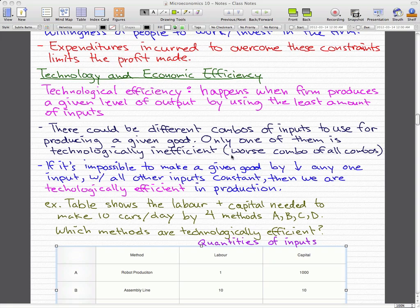Now if it is impossible to make a given good by decreasing any one of the inputs, with all the other inputs being constant, then we are technologically efficient in production. So with all the other inputs constant, if we cannot decrease one input any further, then we are at a technologically efficient production method.